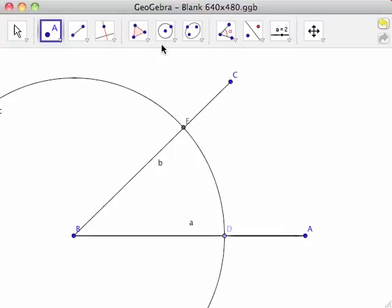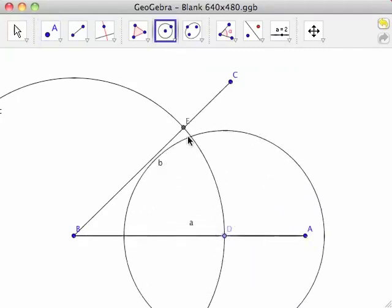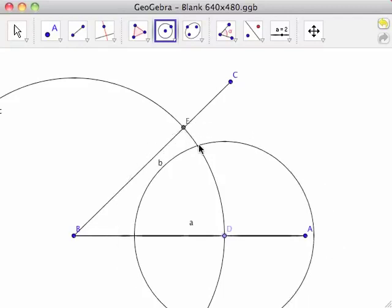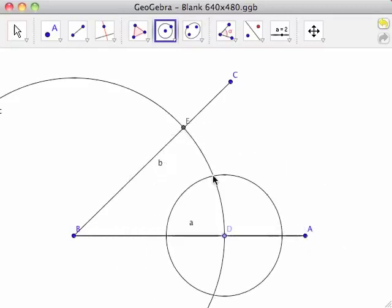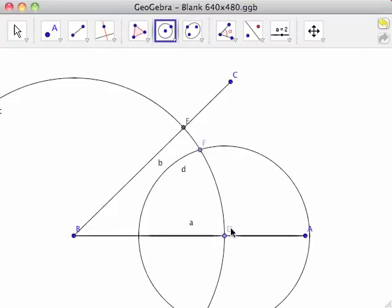Select the circle with center through point tool again and click on point D to place the center of the circle and click on the circumference of circle C between points D and E at least half the distance to point E from point D. This creates circle D.